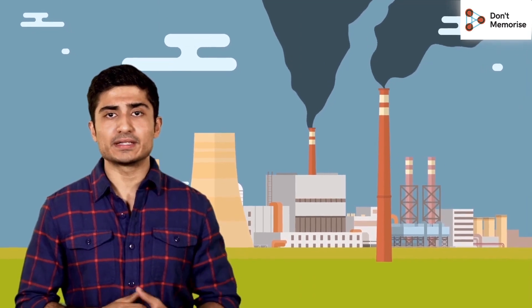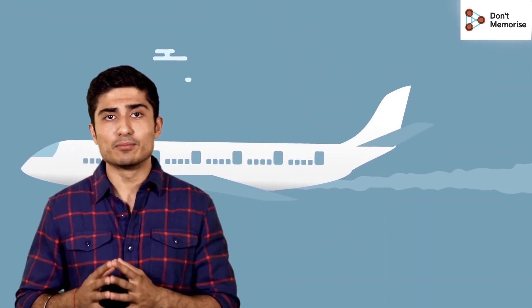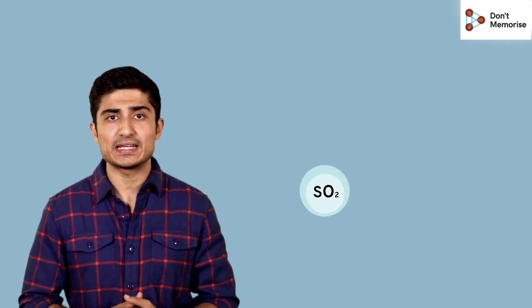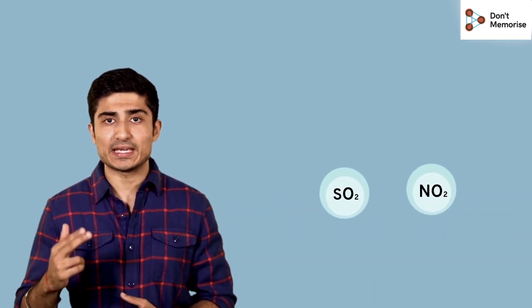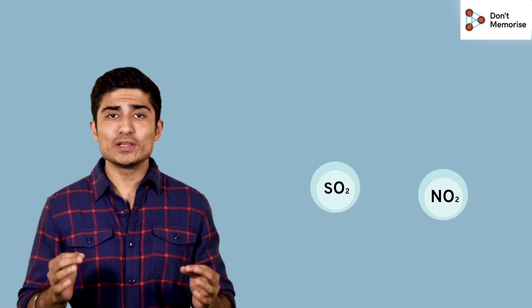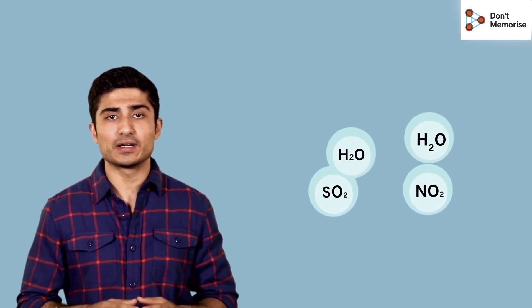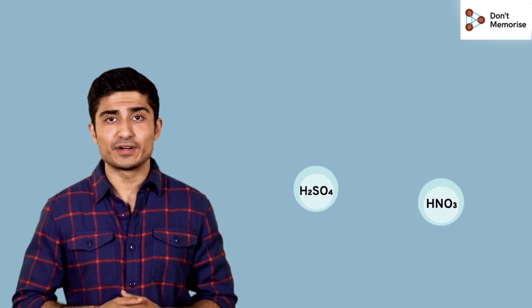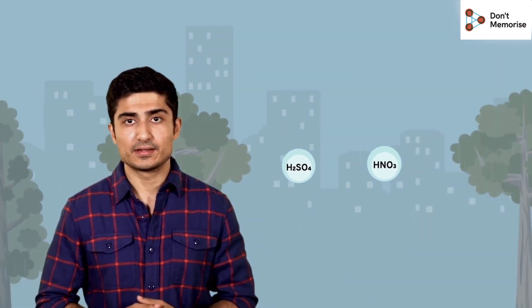When fossil fuels are burnt in factories and power plants, or when aircrafts and motor vehicles release gases like sulfur dioxide and nitrogen oxide into the air, all these gases react with the water vapor in the atmosphere. They then form sulfuric acid and nitric acid. As a result, these gases become part of the rainwater and fall back onto the earth in the form of acid rain.